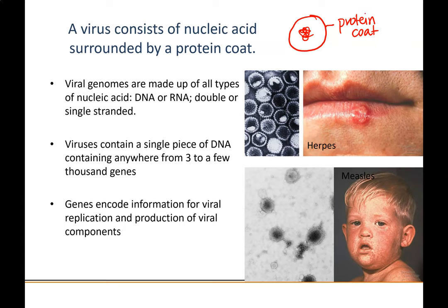Viral genomes can be DNA or RNA, and they can be double-stranded or single-stranded. So we can have double-stranded DNA, single-stranded DNA viruses, double-stranded RNA, or single-stranded RNA viruses — all possibilities. Viruses contain a single piece of DNA or RNA encoding anywhere from three genes in the smallest viruses to a thousand or several thousand genes, depending on how complex their coat is.